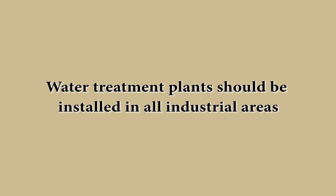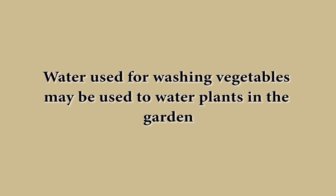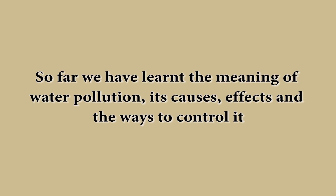Industries are supposed to treat the waste produced before discharging it into water. Water treatment plants should be installed in all industrial areas. We can also think of creative ideas like reusing water used for washing and other household tasks — for example, water used for washing vegetables may also be used for watering plants in the garden. Unless we all realize our responsibility and start using environment friendly processes, the very survival of our planet is in danger. So far, we have learnt the meaning of water pollution, its causes, effects and the ways to control it. Thank you.